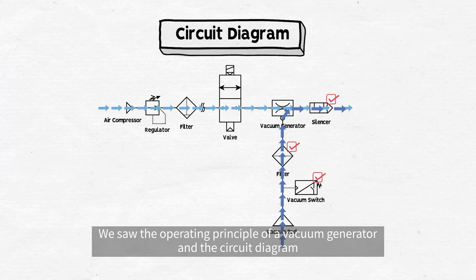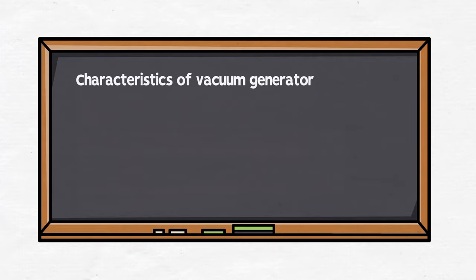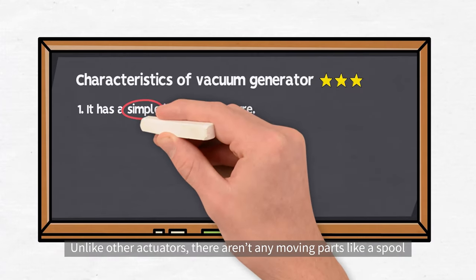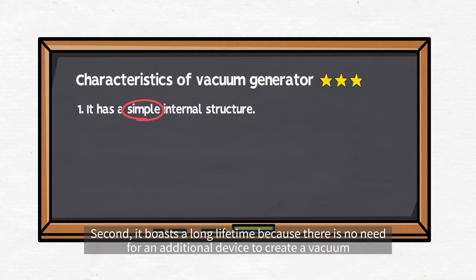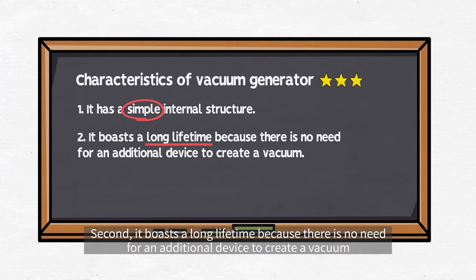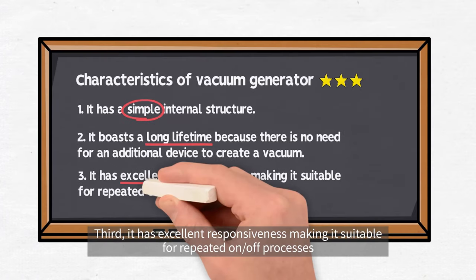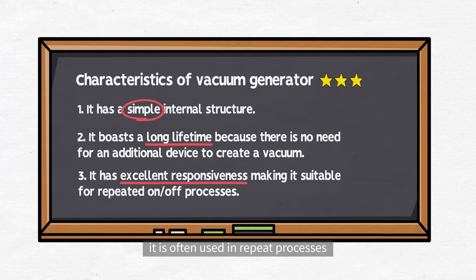We saw the operating principle of a vacuum generator and the circuit diagram. Characteristics unique to vacuum generators are as follows. First, it has a simple internal structure. Unlike other actuators, there aren't any moving parts like a spool. Second, it boasts a long lifetime because there is no need for an additional device to create a vacuum. Third, it has excellent responsiveness making it suitable for repeated on-off processes. A vacuum is created as soon as air is injected and due to its fast response, it is often used in repeat processes.